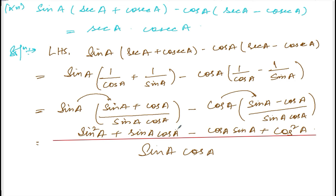Now sin squared A, sin A cos A, sin A cos A can be cancelled. And sin squared A plus cos squared A, it is 1. So 1 divided by sin A into cos A.